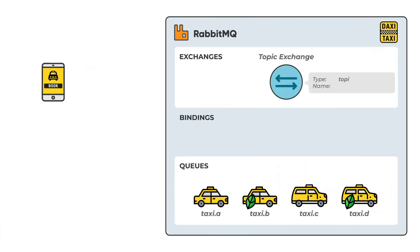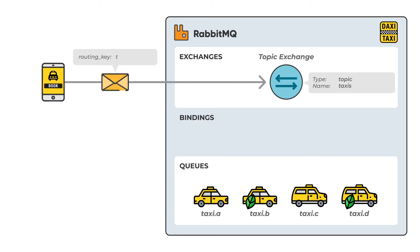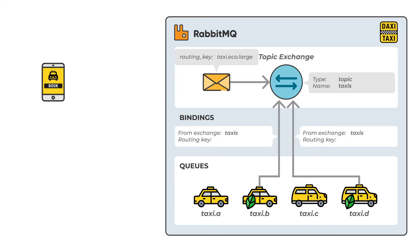Topic exchange routes messages to one or many queues by looking at the routing key. The routing key in the message is compared for matches with routing key patterns on the bindings. In our example, a customer with a group of friends asks for a large environmentally friendly taxi. This order is routed through an exchange bound to taxis of this type. The routing key must be a list of words delimited by a period.